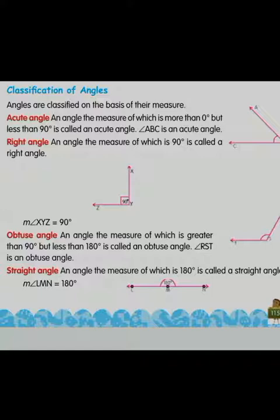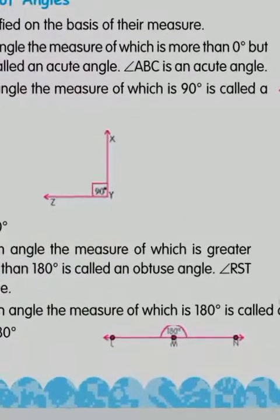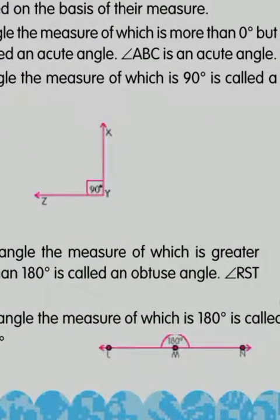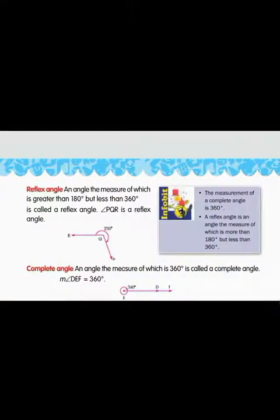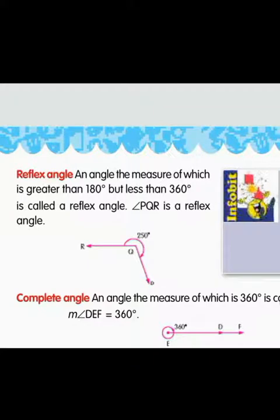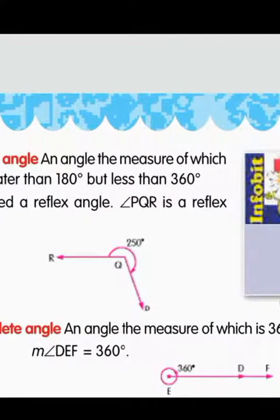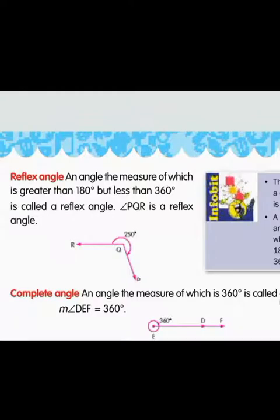The fourth type is a straight angle, whose measure is 180 degrees. It appears in the form of a straight line — the measure of angle LMN is 180 degrees. Next is a reflex angle, whose measure is greater than 180 degrees but less than 360 degrees. Angle PQR in the figure is a reflex angle, measuring 250 degrees.